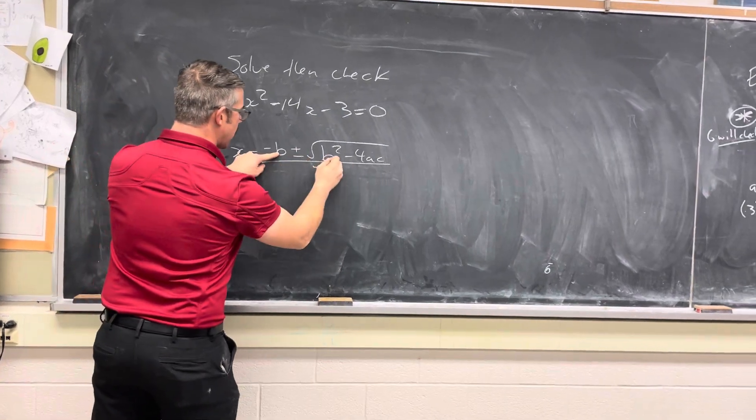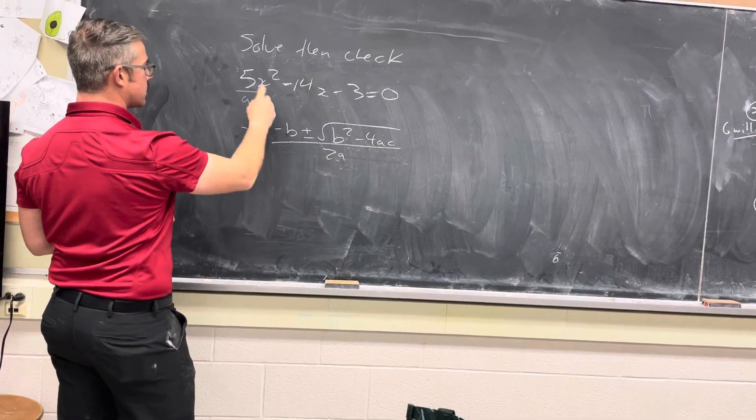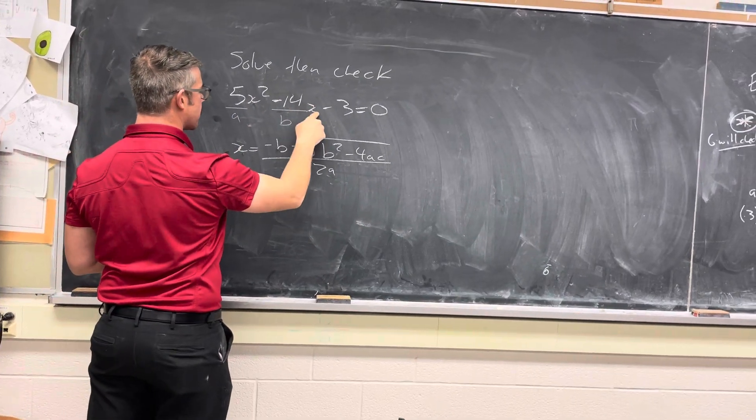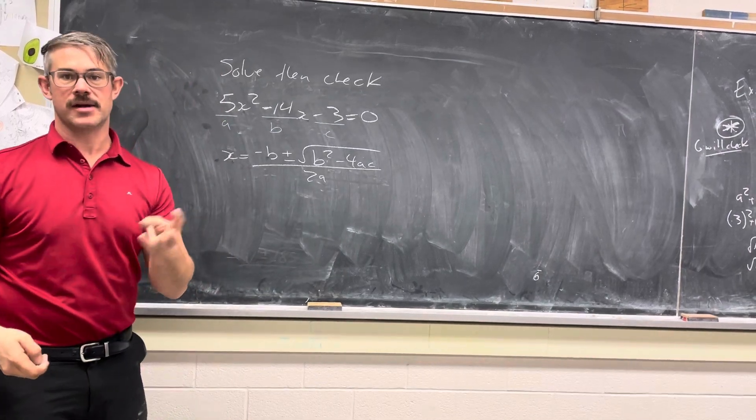Then we have to identify where these b's, a's, and c's come from. a is your coefficient of your x squared term, b is your coefficient of your x term, and c is the constant. That's why we call it c, because it's the constant.